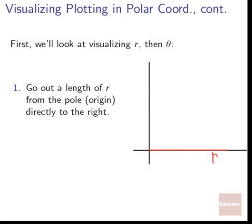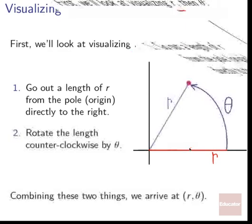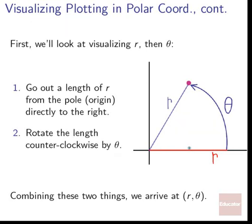First, we'll look at visualizing r, then theta. We can go out a length of r from the pole directly to the right. Here is our center, and we go out some distance r to the right from that pole. The next step is we rotate the length counterclockwise by whatever our angle theta is — we spin that r by that angle. Combining these two things, we arrive at some point r, theta.